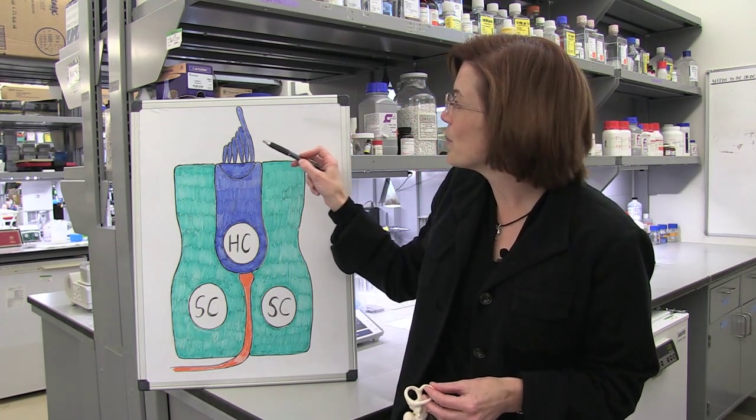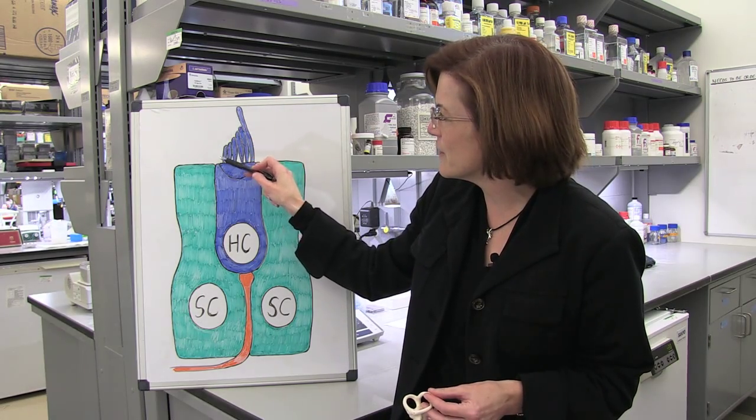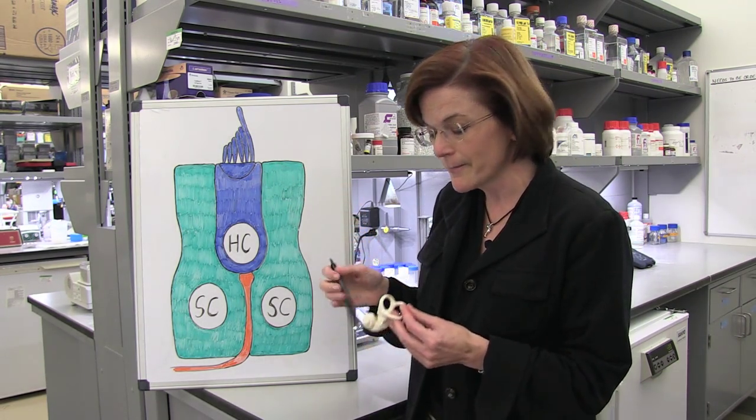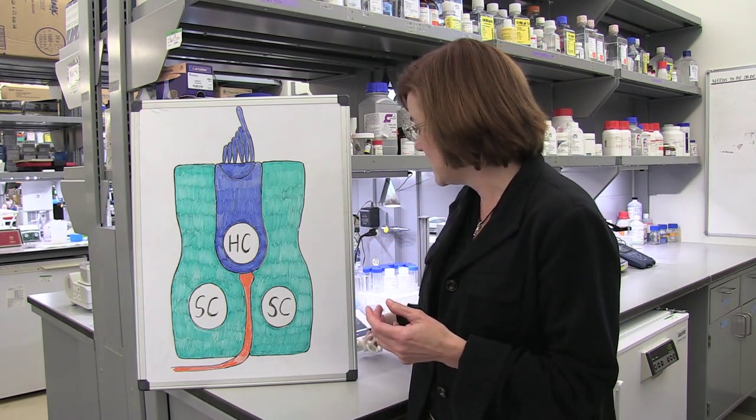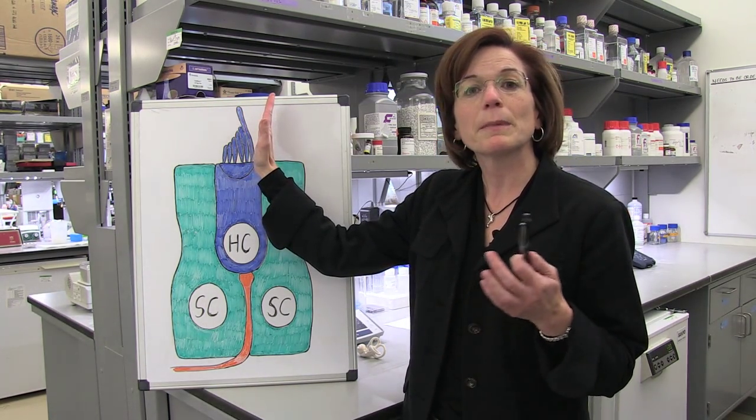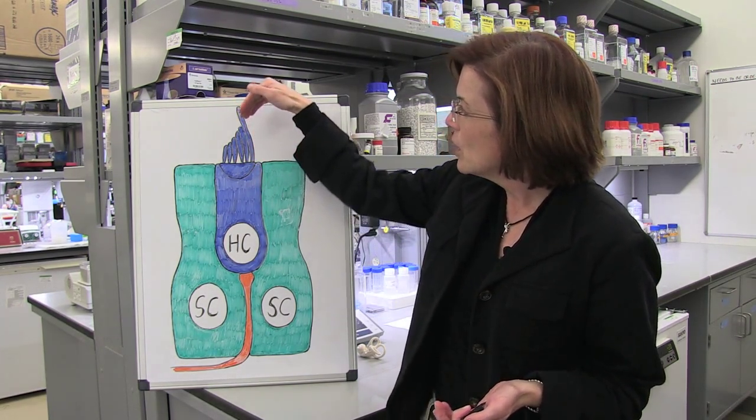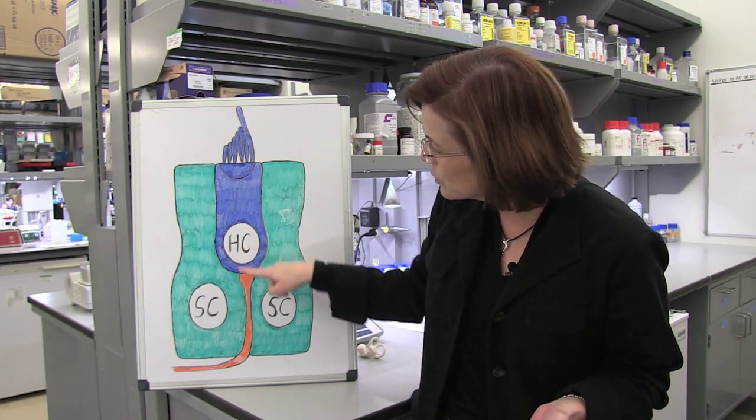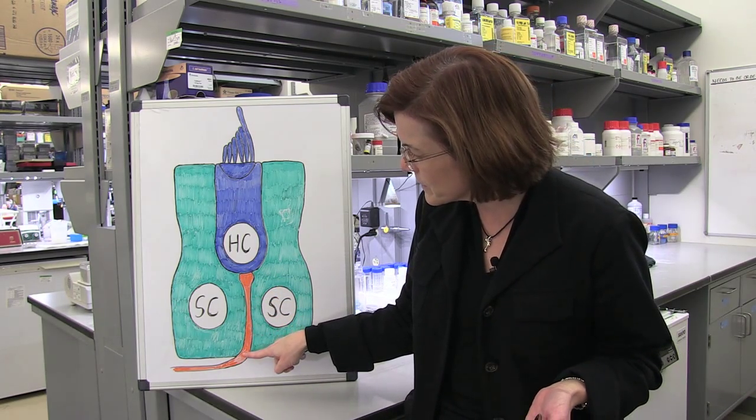It's called a hair cell because on the apical surface of the cell is a bundle of stiff actin-based stereocilia, and when the fluid spaces in the inner ear move, it causes this stereocilia bundle to be deflected. And that deflection opens a mechanically-gated ion channel that depolarizes this cell and causes the cell to release neurotransmitter. And that neurotransmitter is then sent as neural input to the brain.